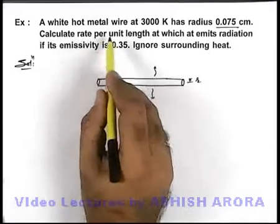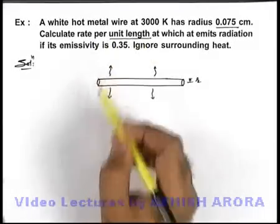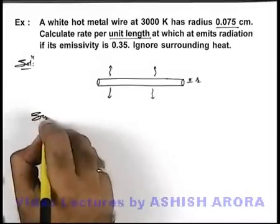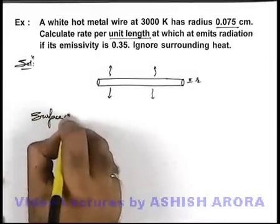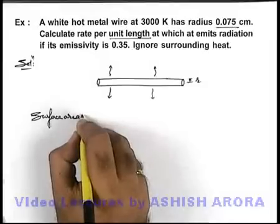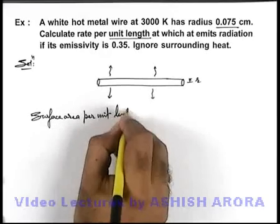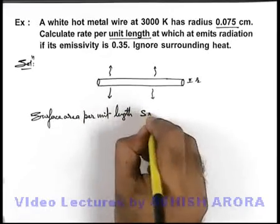And we are required to find its emission rate per unit length. So in this situation we can state its surface area per unit length can be given as...